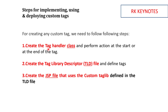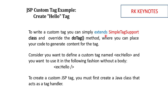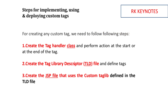For example, for the core tag the prefix is 'c', which is already defined, but for custom tags you can define your own prefix. Moving on, we need to follow three steps. In the first step, we have to create a tag handler class. In this class we will be extending the SimpleTagSupport class and then we need to override the doTag method. In the second step we create a Tag Library Descriptor — the TLD file — and define the tags inside it. In the third step we create a JSP file which uses these tag libraries to print the output.